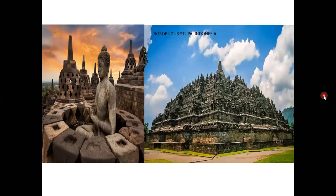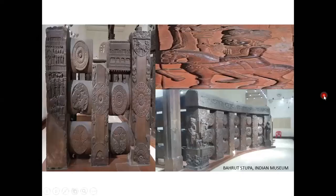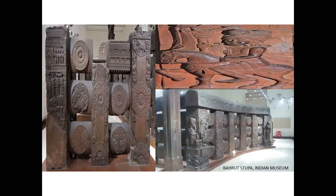Going back to the textbook, here you have pictures of Virgals, the Barhut stupa — a part of which is actually preserved in the Indian Museum at Kolkata — and the Barhut stupa.